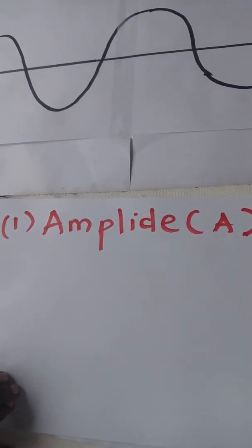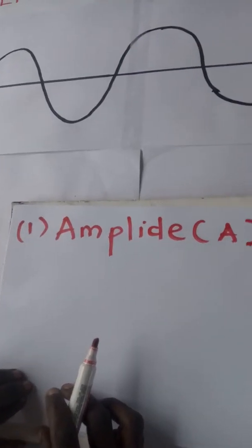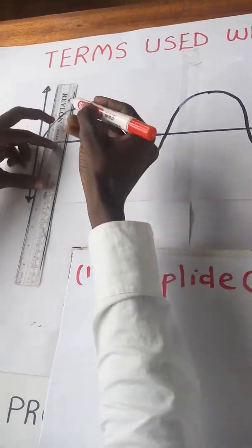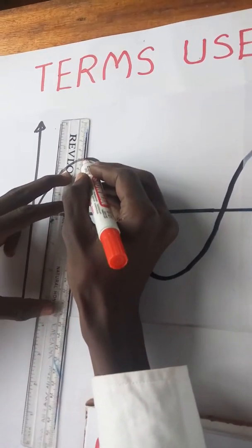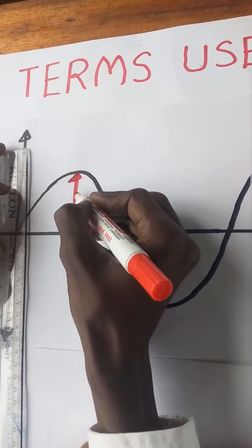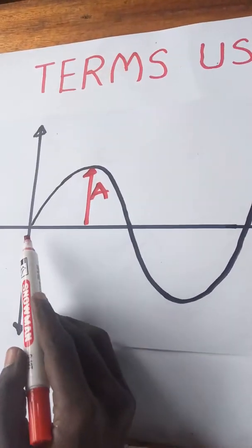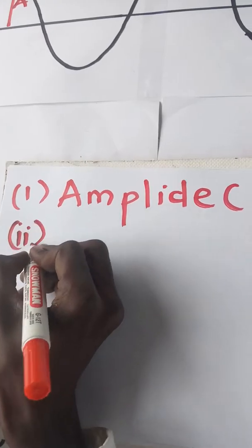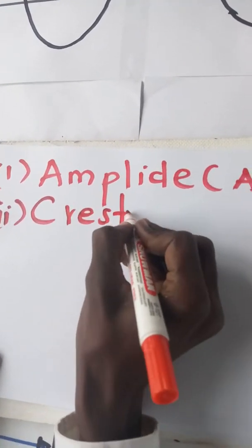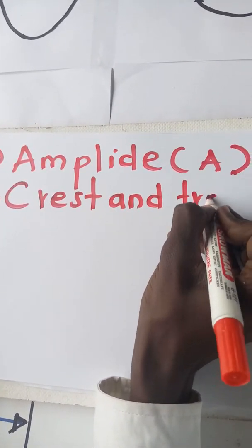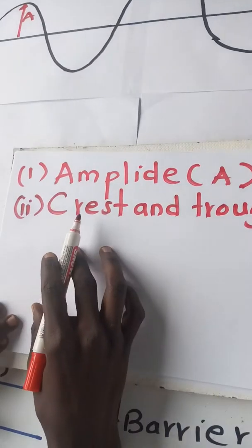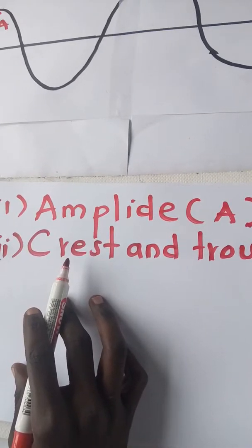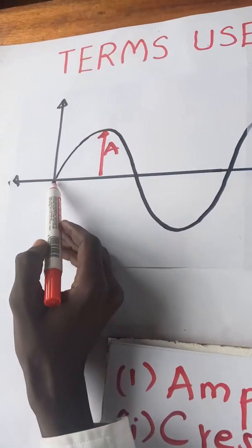Dear students, let's see the terms used with waves. Number one, we have amplitude. Amplitude is the maximum displacement from the equilibrium position. So, if this is the diagram representing waves, amplitude is the maximum displacement from the equilibrium position — this distance from the equilibrium position.